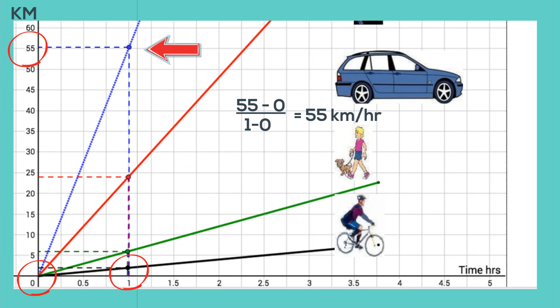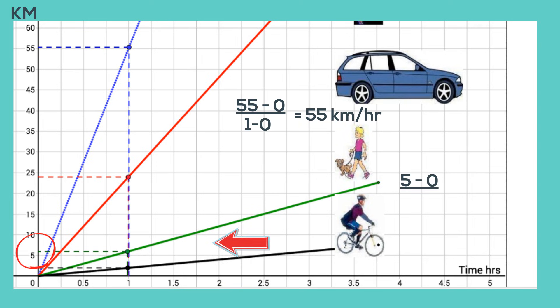And that gives you a speed of 55 kilometers per hour. Now look at the green line and that represents running. The final distance is five kilometers and the initial distance is zero. And this is divided by the final time of one hour and the starting time of zero or five kilometers per hour.